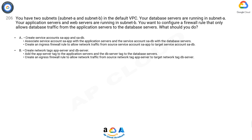B. Create network tags app server and DB server. Add the app server tag to the application servers and the DB server tag to the database servers. Create an egress firewall rule to allow network traffic from source network tag app server to target network tag DB server.